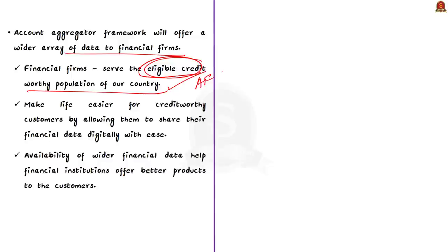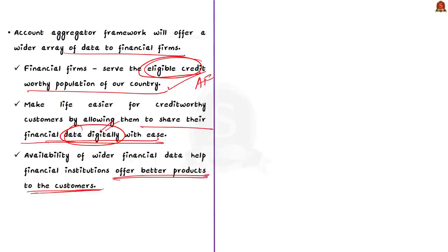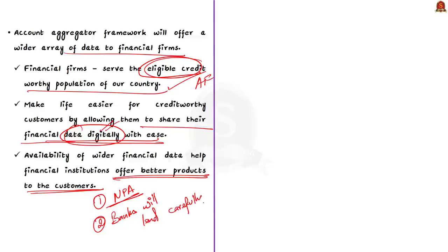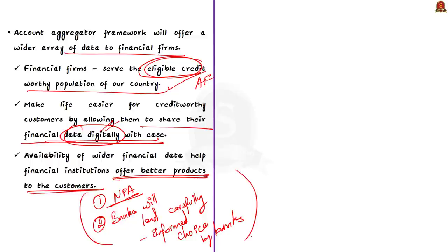Account aggregators can also make life easier for creditworthy consumers by allowing them to share their financial data digitally with ease — you don't have to run behind the aggregator with papers; you can do it digitally. The availability of wider financial data may also help financial institutions offer better products to customers. Because a creditworthy individual is getting the credit, the NPA chances are getting lower. The bank will not lend to people who are not creditworthy or who will default on payments because of this transparent framework. We all know the NPA problem is a plaguing problem in India, so this setup is very beneficial.